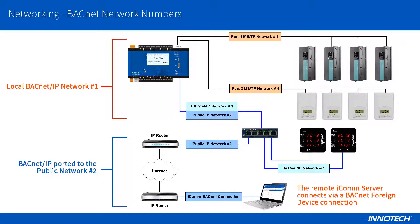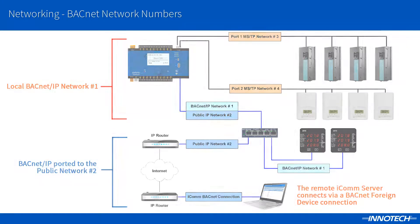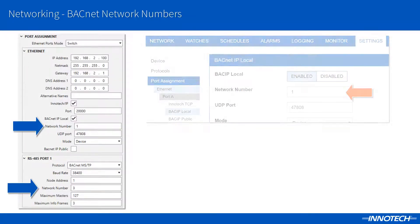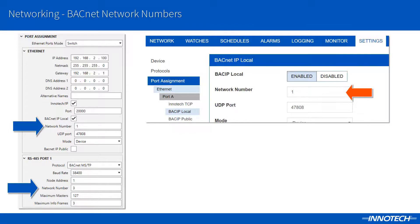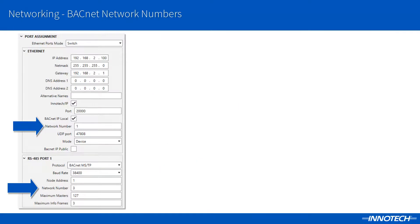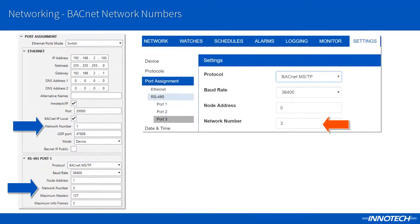For more information on remote network connections, refer to the networking videos. The network number settings can be configured via Focus or Omni's web server. If the settings are configured via the web server, ensure that the configuration is transferred back into Focus to obtain the final updated configuration.